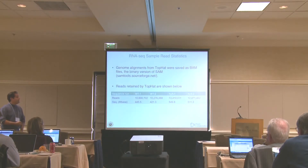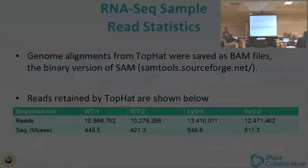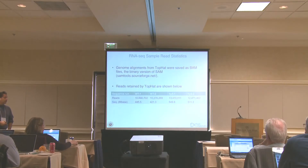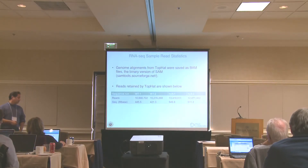These alignments are saved as BAM files, which is a binary version of SAM. This is the de facto standard for short read alignments these days, and there's a SAMtools kit that's good for manipulating these things. These particular libraries are around 10 to 13 million reads for each sequencing run. As the volume goes up and the costs go down, these have become fairly modestly sized RNA-seq libraries.